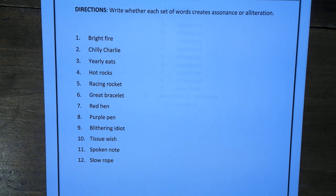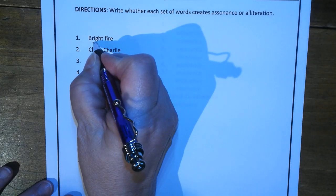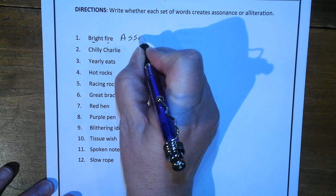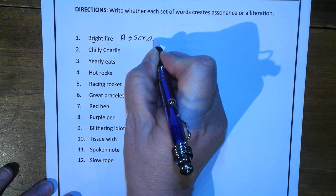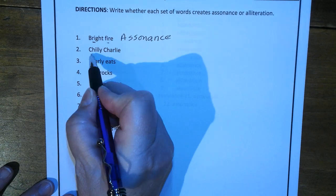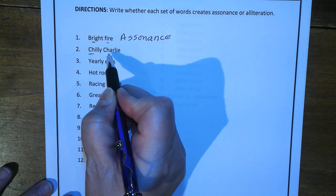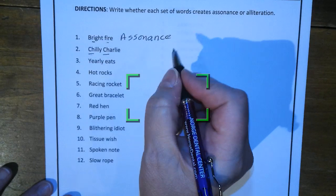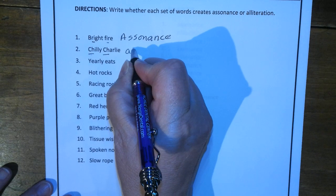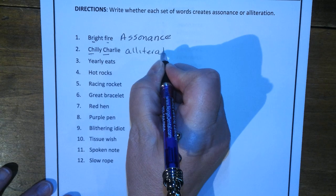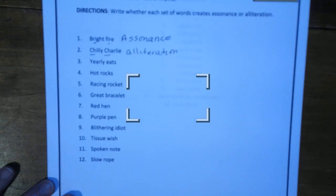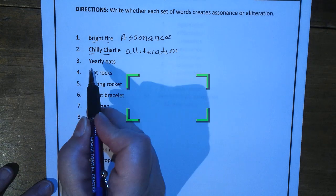Bright fire — you're talking about the long I being repeated, so that is assonance. Chili Charlie — that's pretty easy; the beginning of the word is a consonant sound, so that is alliteration. Yearly eats — you've got a long E sound there and there, so that's assonance.